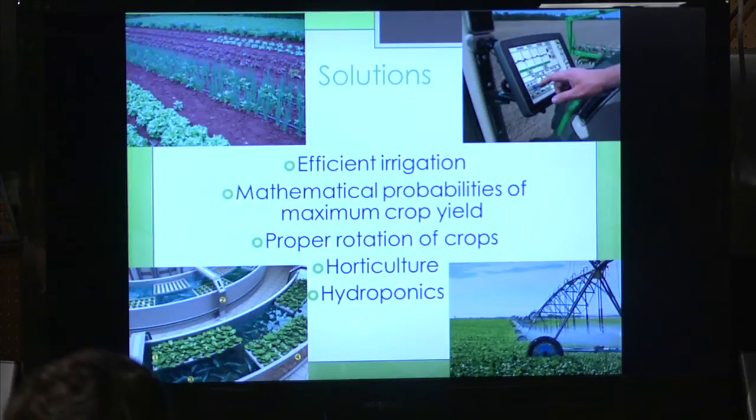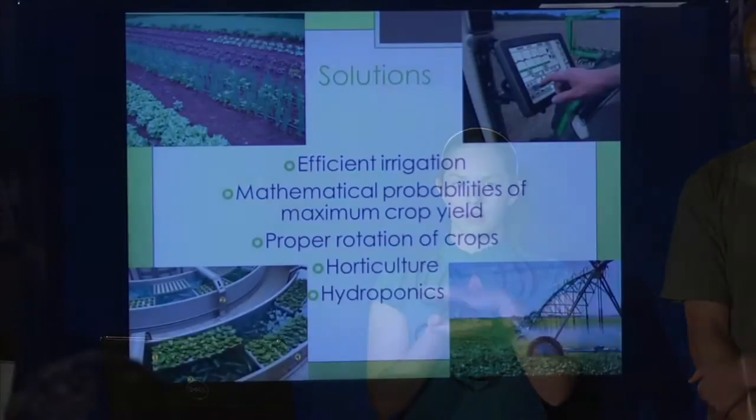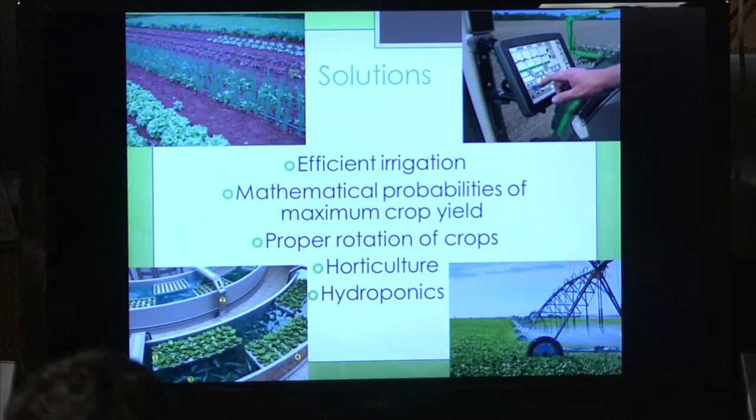This leads to a couple of different solutions: efficient irrigation, so you're not using so much water that you're stripping all the soil away and causing deep ruts like you saw on the previous page. There are also mathematical probabilities of maximum crop yield based off different nutrients in the soil, which is actually what our calculus part is on. And then there's the proper rotation of crops, horticulture, and hydroponics. Hydroponics is where you grow plants basically in water — you have them suspended above water so their roots are in the water, which is kind of what the bottom left picture is showing.